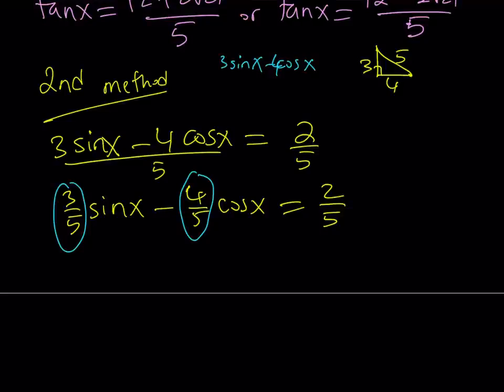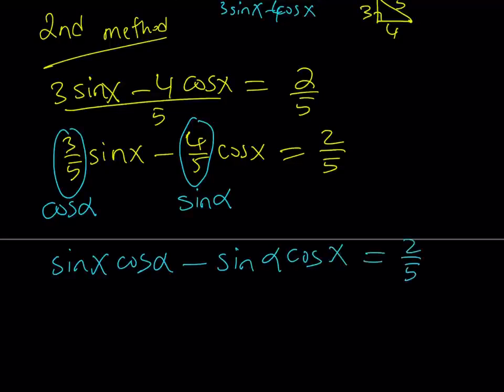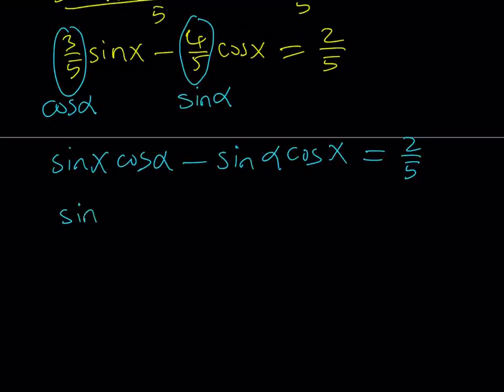I can replace 3 over 5 with cosine alpha, alpha being an acute angle, because both sine and cosine are positive. And 4 over 5 is the sine alpha value. This gives us sine x cosine alpha minus sine alpha cosine x. This is something you should be familiar with: sine x minus alpha equals 2 over 5.